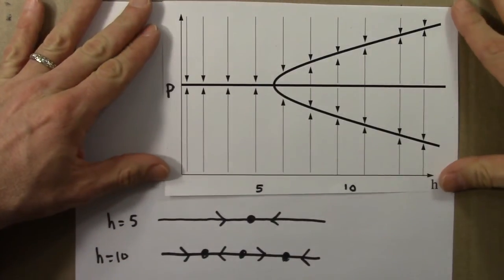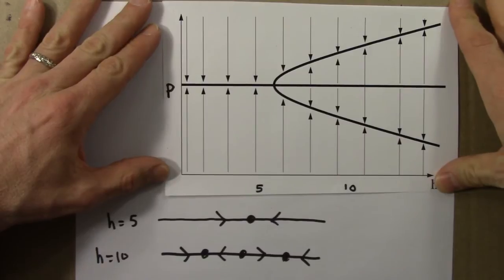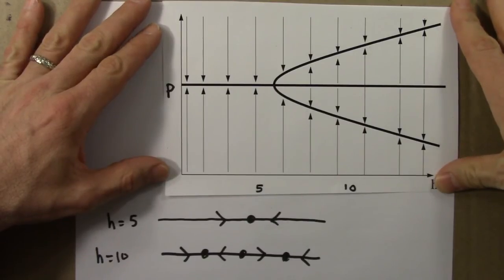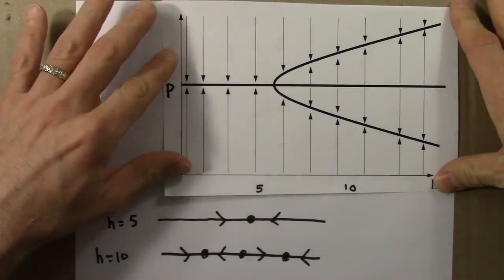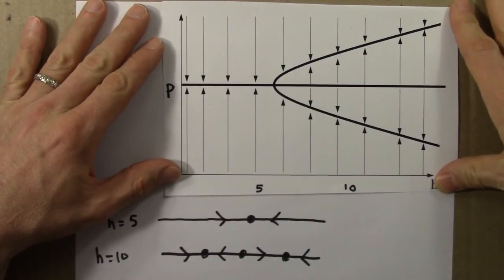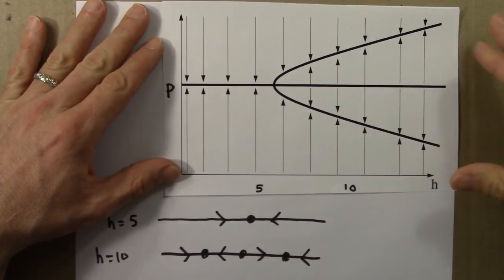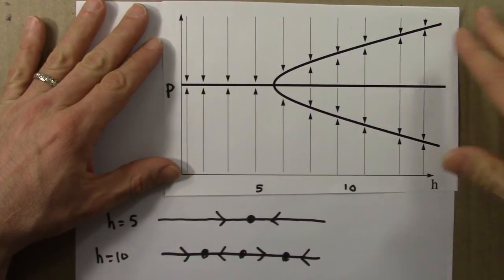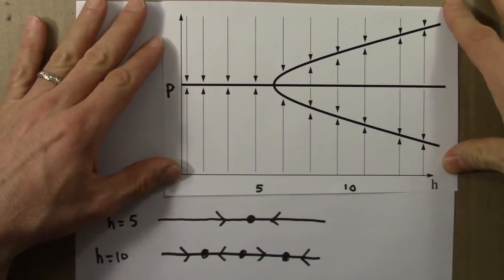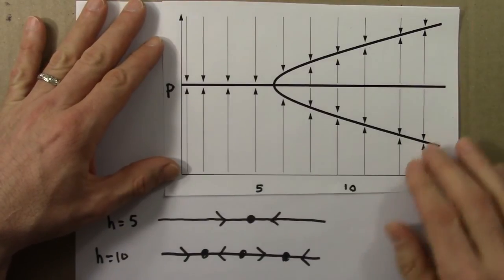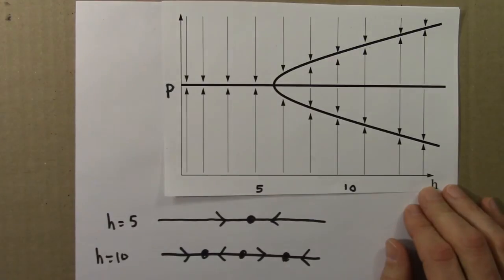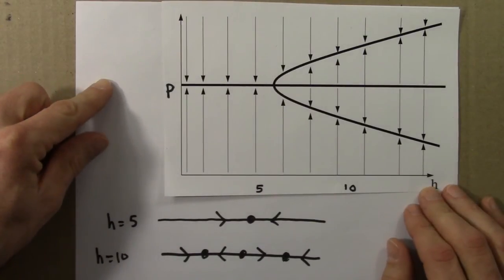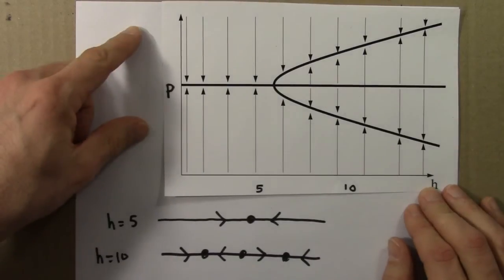These are bifurcation diagrams. They're very commonly used to summarize the behavior that a particular model, a differential equation, or an iterated function can do. They're a very common device in dynamical systems for studying all sorts of different systems, not just differential equations. We'll see bifurcation diagrams again in the next unit, which is about bifurcation diagrams for the logistic equation as an iterated function.